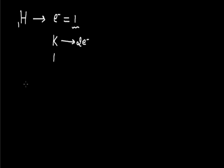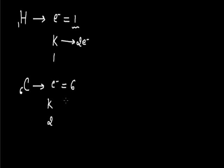For carbon with atomic number 6, it contains 6 electrons. The first 2 electrons move to K shell, filling it to its maximum capacity. The remaining 4 electrons move to L shell. So the configuration for carbon is K2, L4.